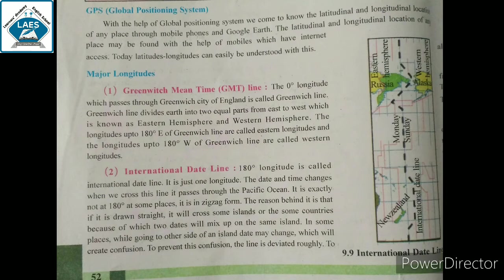The longitudes up to 180 degrees East of the Greenwich line are called eastern longitudes, and the longitudes up to 180 degrees West of the Greenwich line are called western longitudes. East का E और West का W लिखा हुआ है। दोनों तरफ 180-180 degree है, क्योंकि zero degree longitude earth को two equal parts में divide करता है।